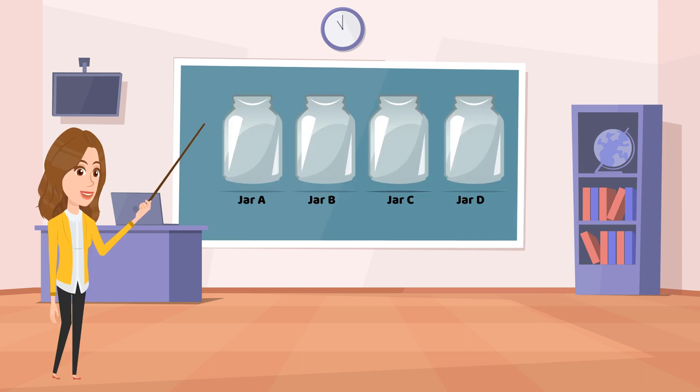Imagine you have a set of data. There are four jars. Jar A has two cookies. Jar B has six cookies. Jar C has seven cookies. Jar D has four cookies. Let's use this data to create a bar graph.